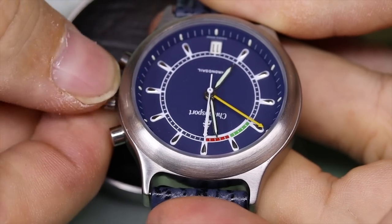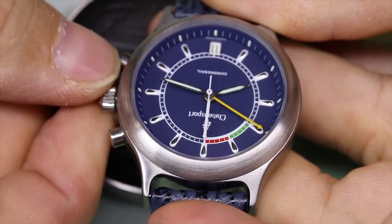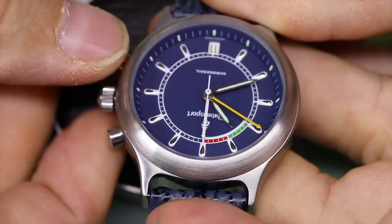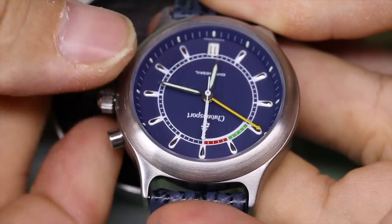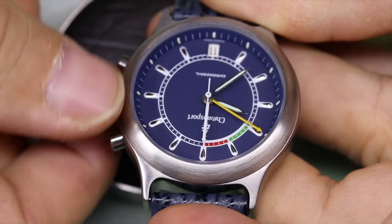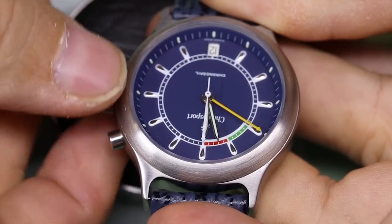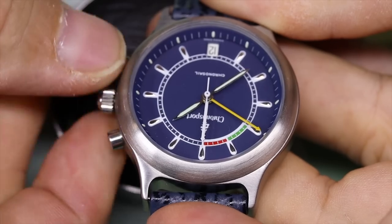We see it's a chronograph and it has the yellow hand which is actually the countdown to a regatta start. Then you have that marking in green and red which shows ten and five minutes left to start.